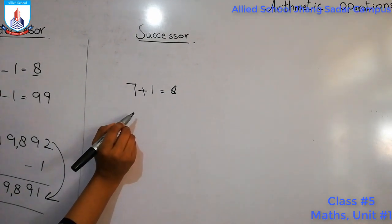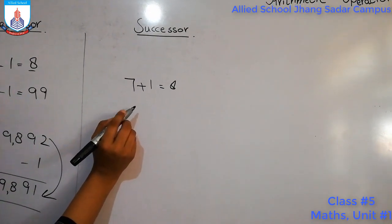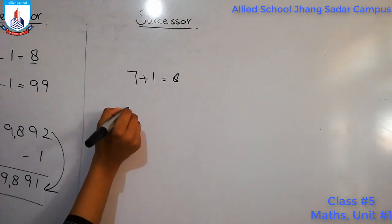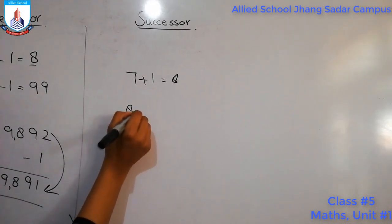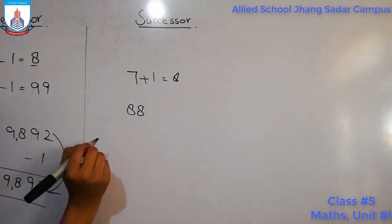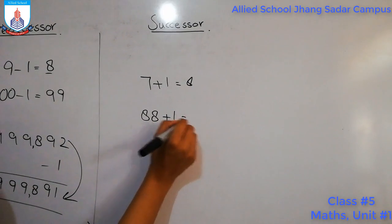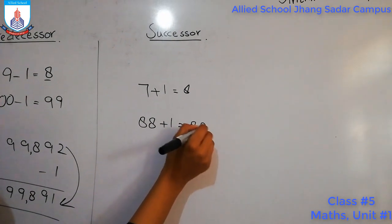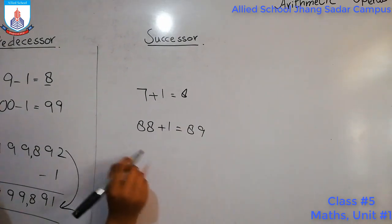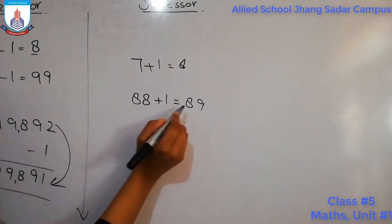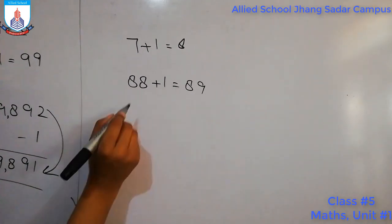Similarly, if we have to find the successor of, suppose, 88, then we will add 1 and the answer will be 89. So the successor of 88 is 89.